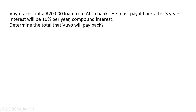Here's our first example. Vujo takes out a 20,000 rand loan from APSA Bank. He will pay it back after three years. Interest will be 10% per year, compound. Determine the total that Vujo will pay back.